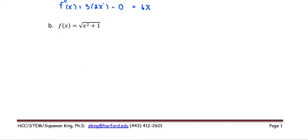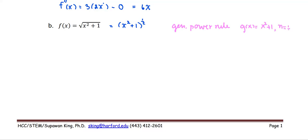For the next function, f(x) is the square root of x squared plus 1. We can rewrite the radical form as the quantity x squared plus 1 to the power one-half. This is in composite function form, so when we find the first derivative we use the general power rule, where g(x) equals x squared plus 1, the power n is one-half, and g prime — the derivative of the inner function — is 2x. The general power rule states the derivative of g(x) to the n is n times g(x) to the n minus 1 times g prime.